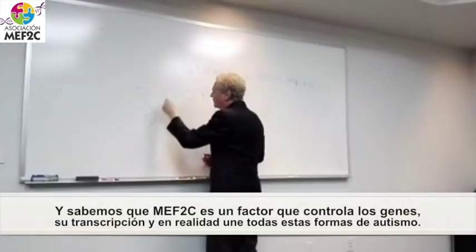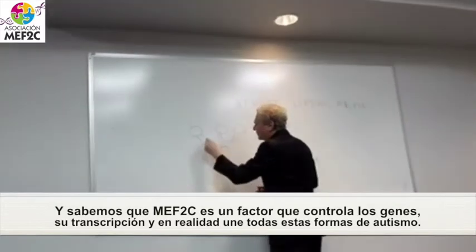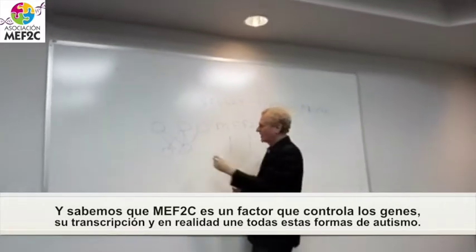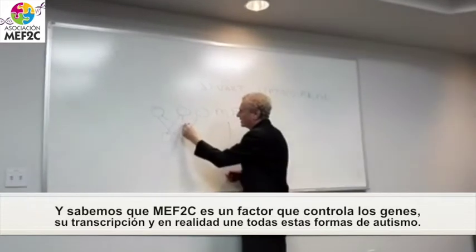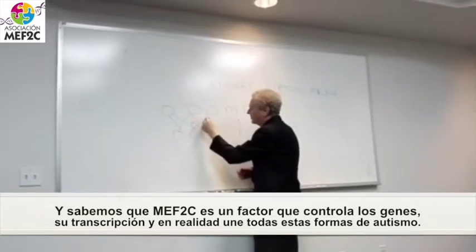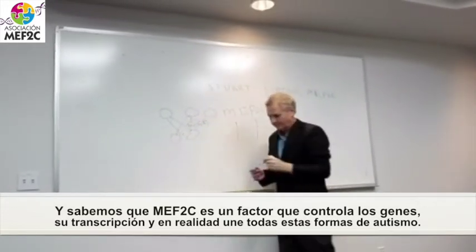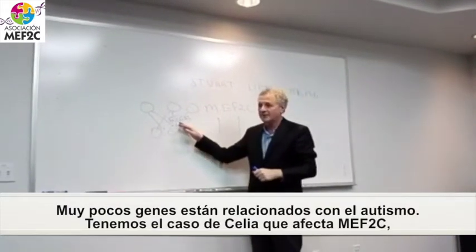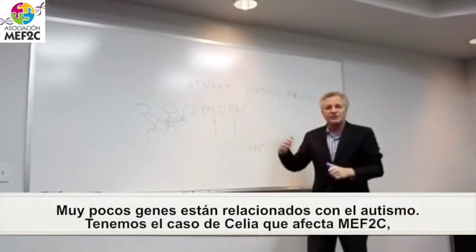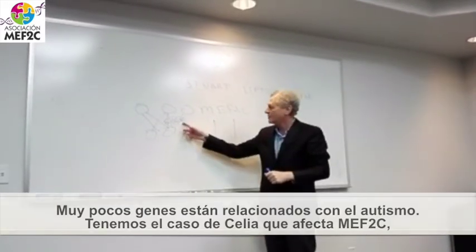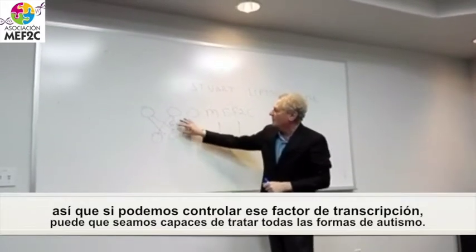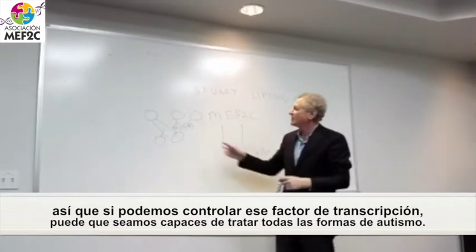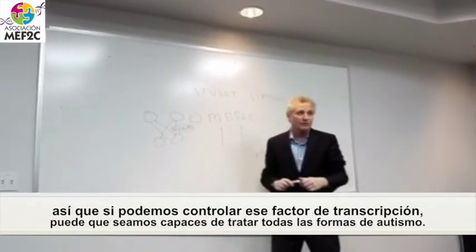MEF2C is a factor that controls genes — it's called a transcription factor — and it actually links all of these forms of autism. Very few genes are involved in autism in that way. So not only do you have Celia's case which is affecting MEF2C, but if we could affect that transcription factor, we might be able to treat all forms of autism.